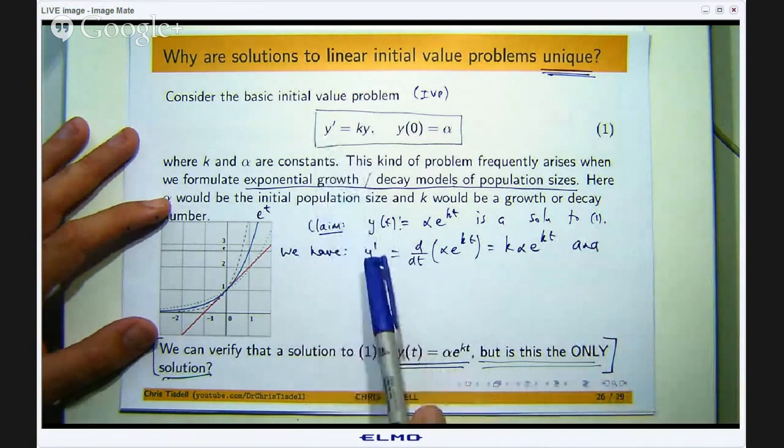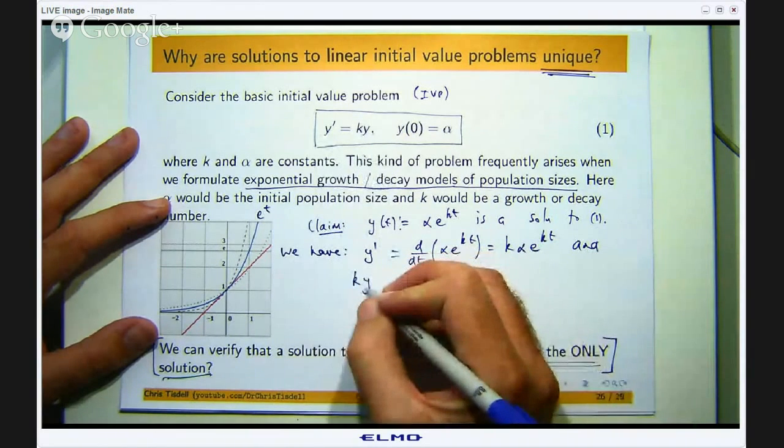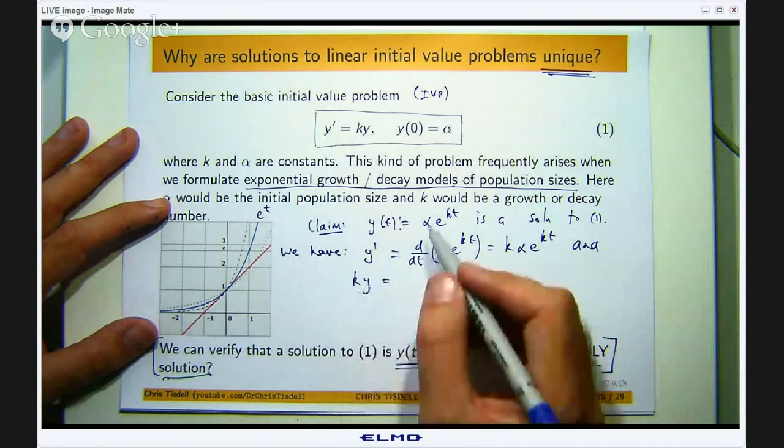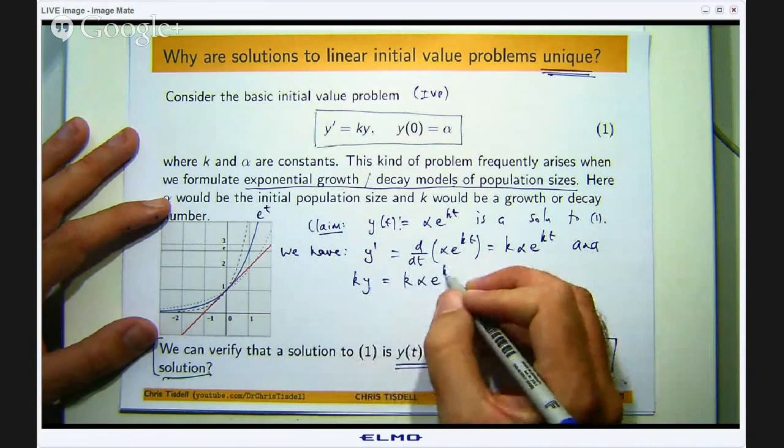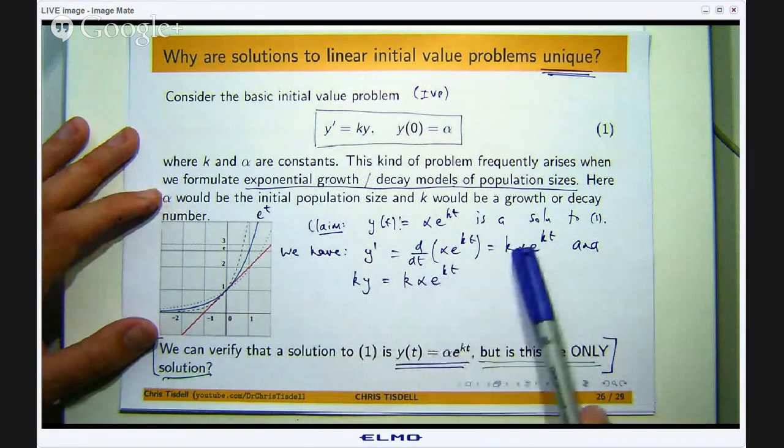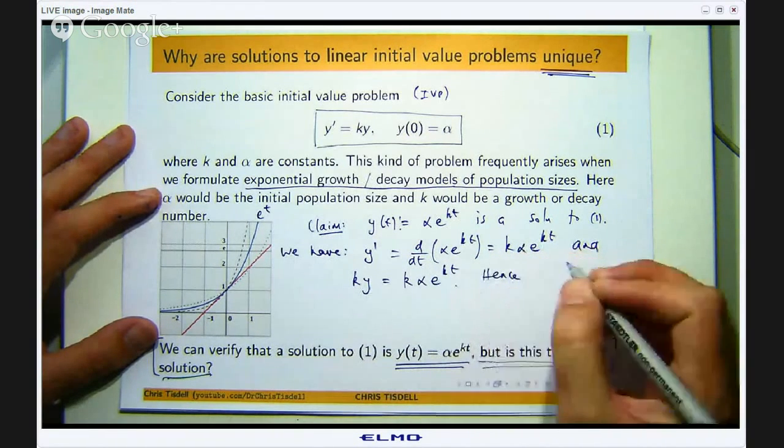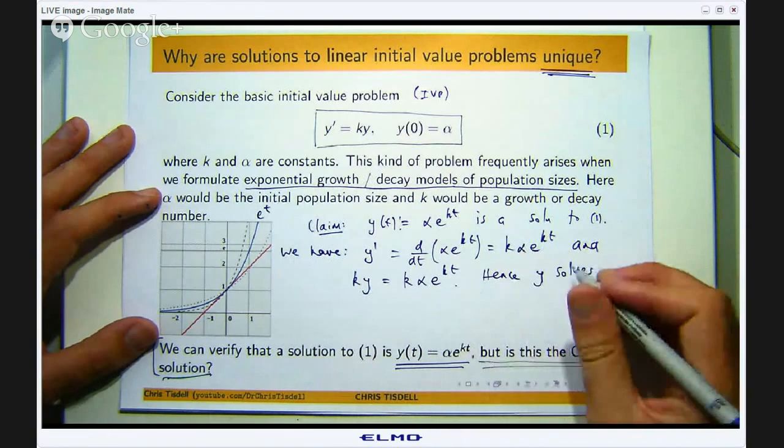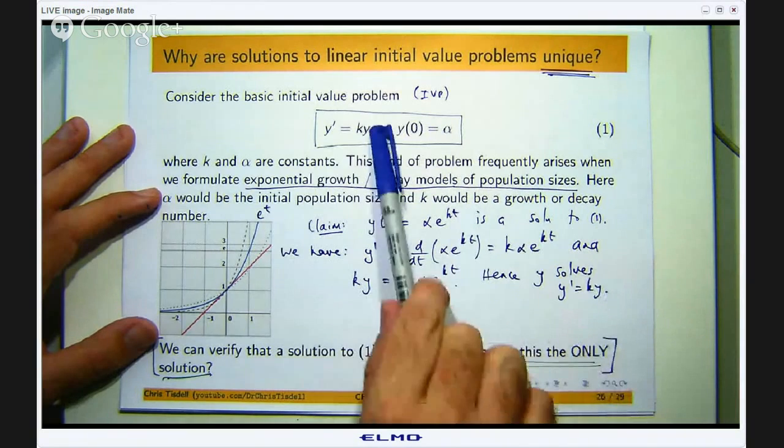So that is basically the left hand side of our differential equation. What is the right hand side? Just k constant times the function y. And you can see that these things are equal.